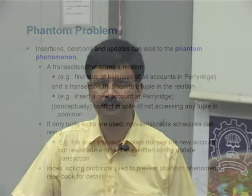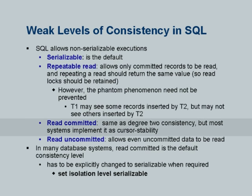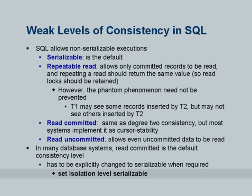Certain other databases — DB2 and SQL Server — pay a lot of attention and will actually ensure that the phantom problem will not occur if you say isolation level serializable. They are a little more trustworthy in the serializability sense. The book has more coverage of efficient protocols which use indices to prevent the phantom problem. SQL allows different levels of serializability: serializable which is supposedly the default but nobody treats it as default, repeatable read, read committed, and read uncommitted. Set isolation level is the SQL syntax — in PostgreSQL it is set transaction isolation level.